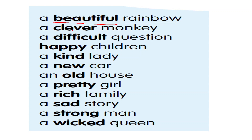A clever monkey — clever is the adjective. A difficult question — difficult is the adjective. Happy children — happy is the adjective. Kind lady — kind is the adjective. A new car — new is the adjective. An old house — old is describing the noun, so old is the adjective of quality. A pretty girl — pretty is the adjective. A rich family — rich is the adjective. A sad story — sad is the adjective. A strong man — strong is the adjective. And a wicked queen — wicked is the adjective.